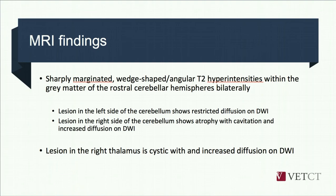In summary, the MRI shows sharply marginated, roughly wedge-shaped or angular T2 hyperintensities within the grey matter of the rostral cerebellar hemispheres bilaterally, and a lesion in the right thalamus. The left cerebellar lesion shows restricted diffusion on DWI, while the right cerebellar lesion shows atrophy with cavitation and increased diffusion on DWI. Additionally, the right thalamic lesion is cystic and also shows increased diffusion on DWI.